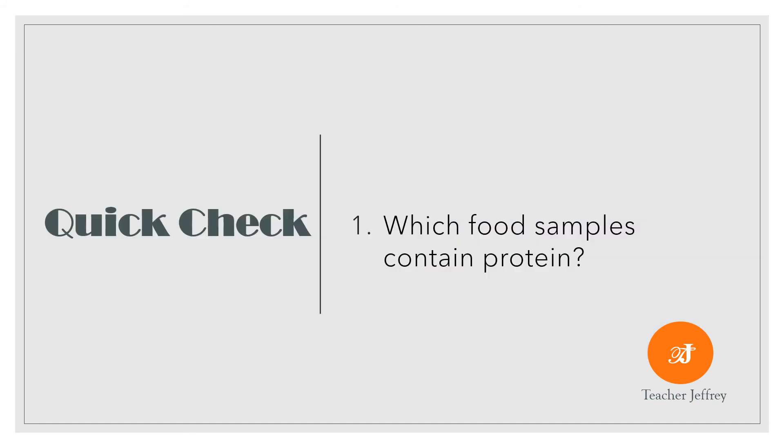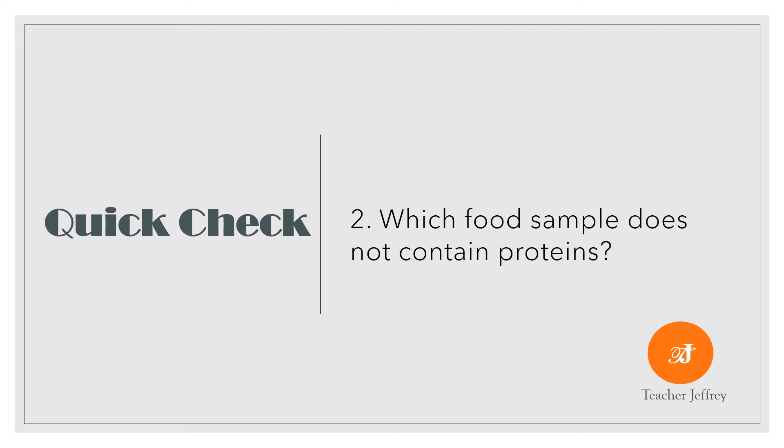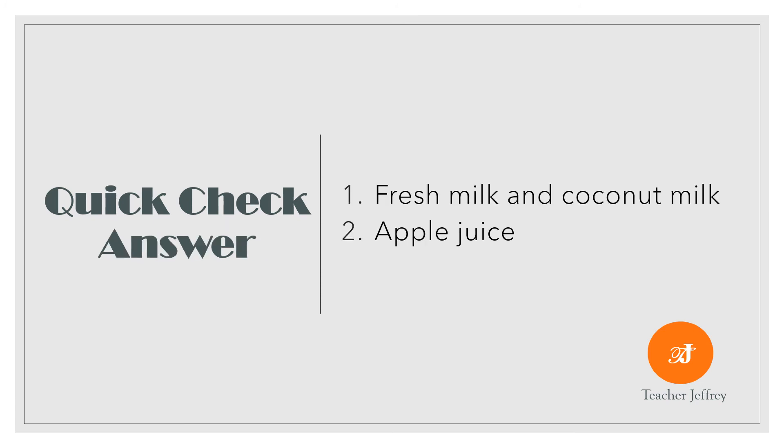We will now have our quick check. Let's check our knowledge gain. Number 1: Which food samples contain proteins? Number 2: Which food sample does not contain protein? These are the answers for our quick check. Number 1: Fresh milk and coconut milk turn purple in Biuret reagent. They contain protein. For number 2: Apple juice did not turn purple in Biuret reagent. It does not contain protein.